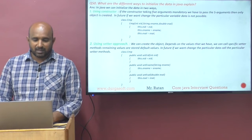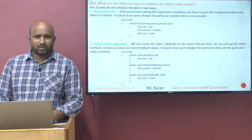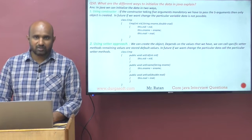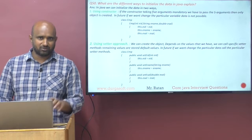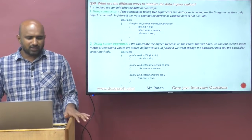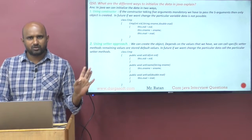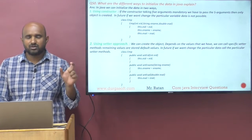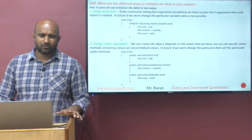Constructor injection means mandatory dependencies. If the constructor expects five arguments, when we create the object, we must pass all five values — that is called mandatory injection. Like when you join a company, you must submit all the mandatory documents to get your employee ID assigned.